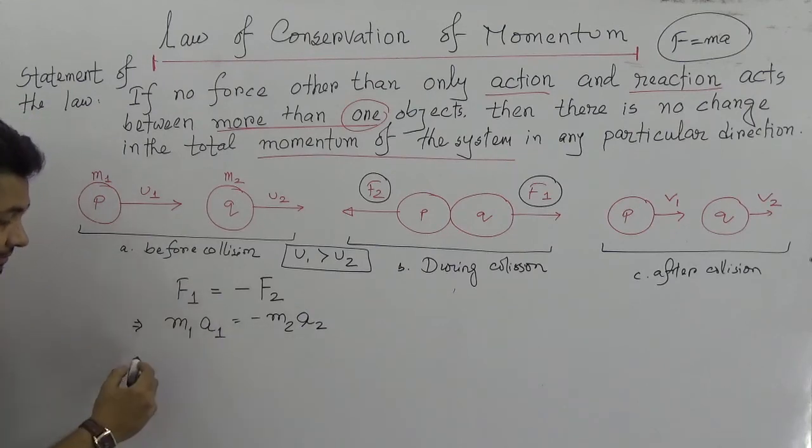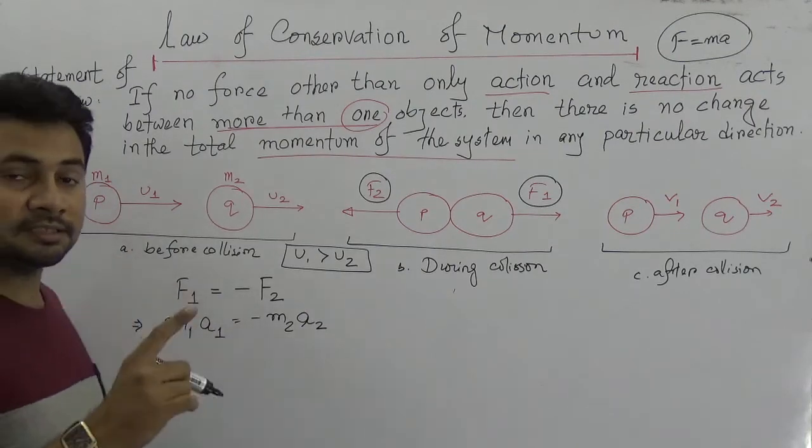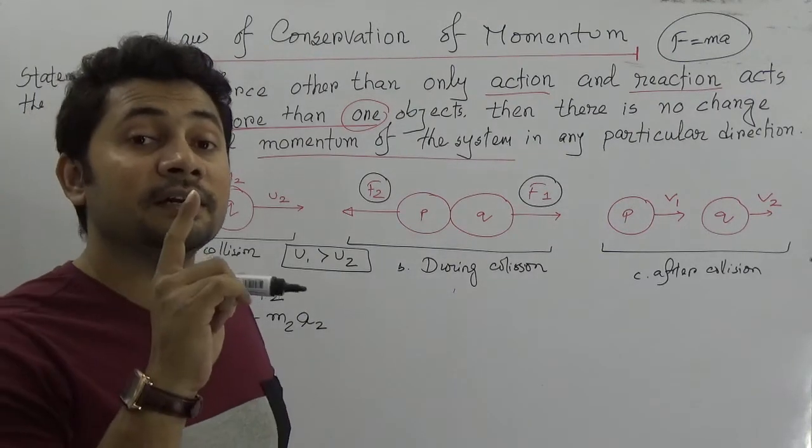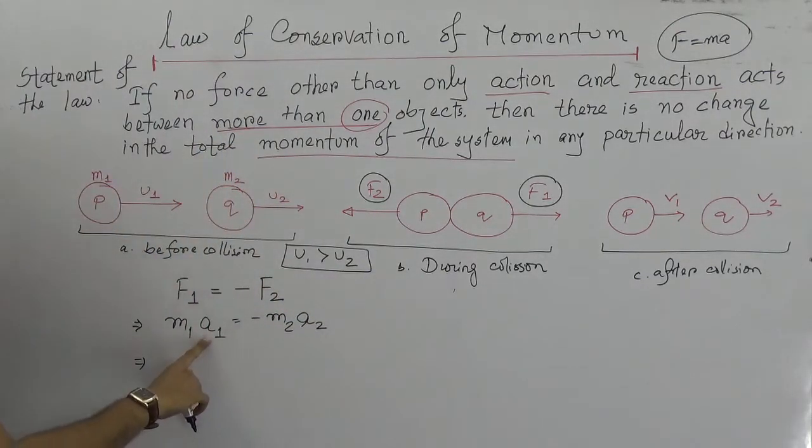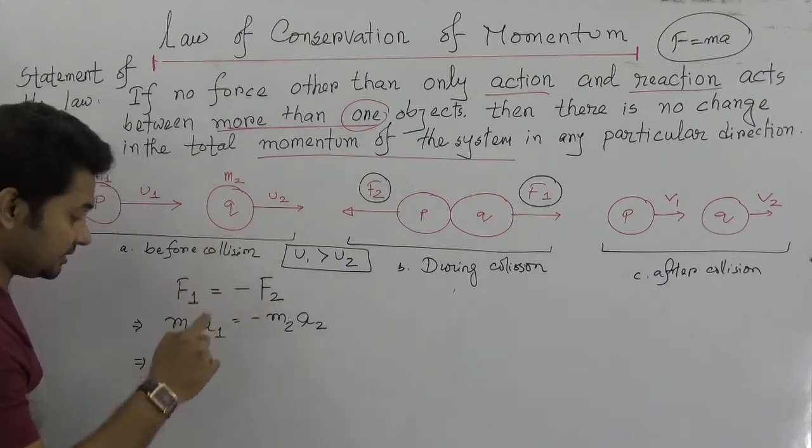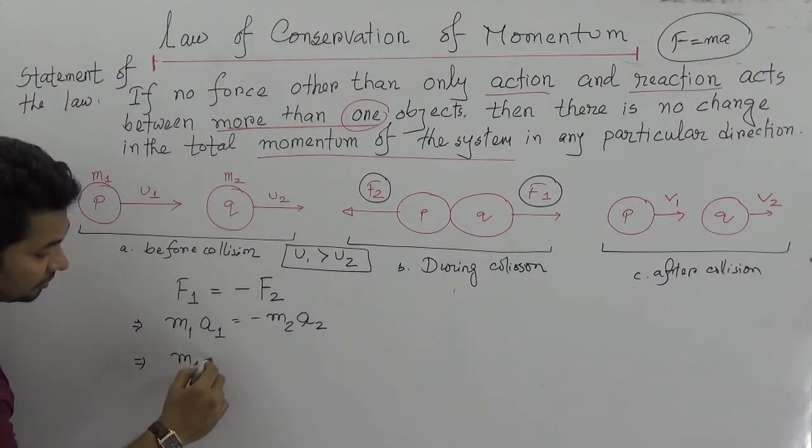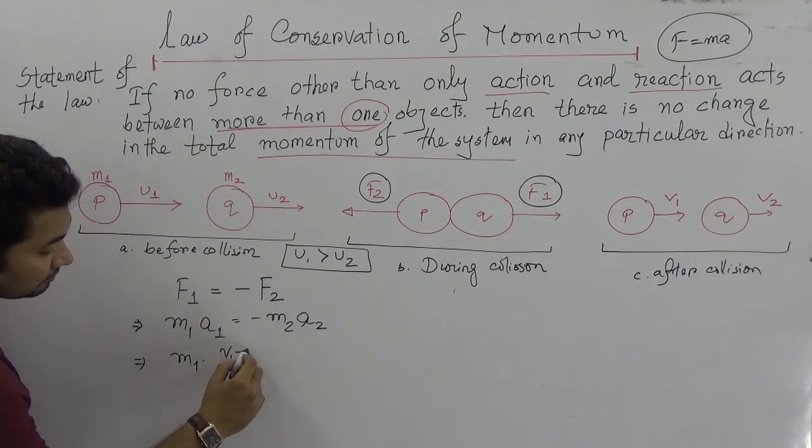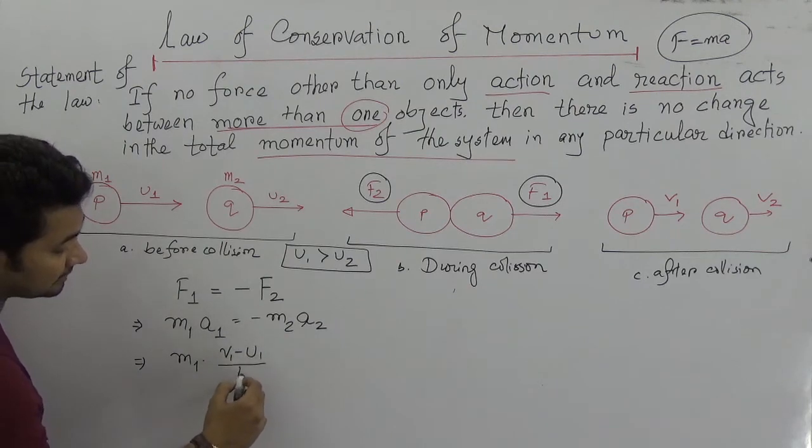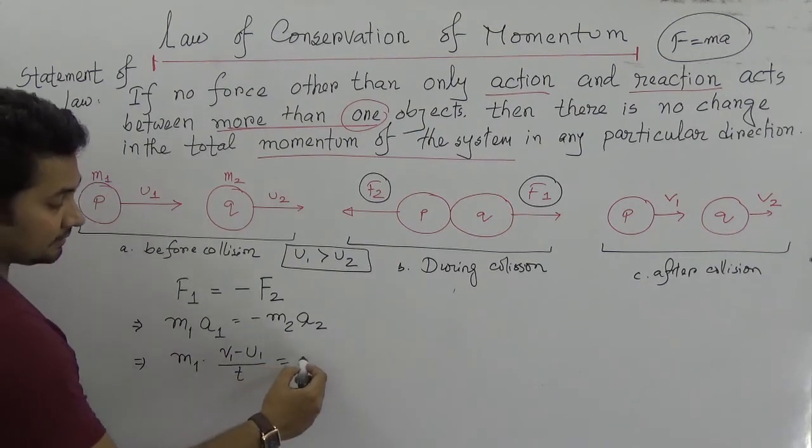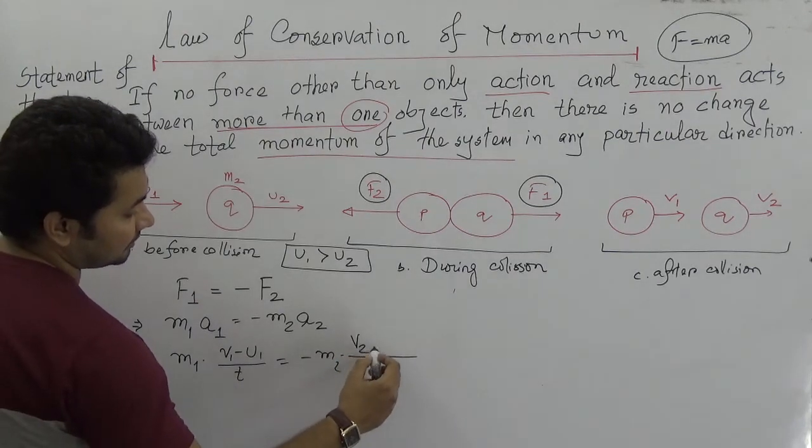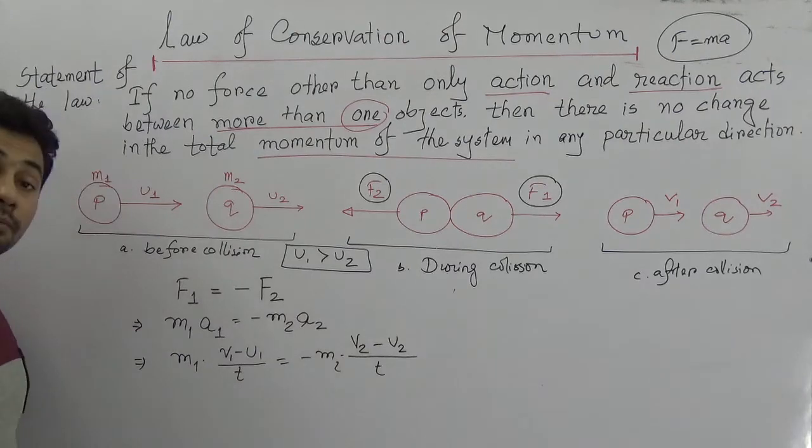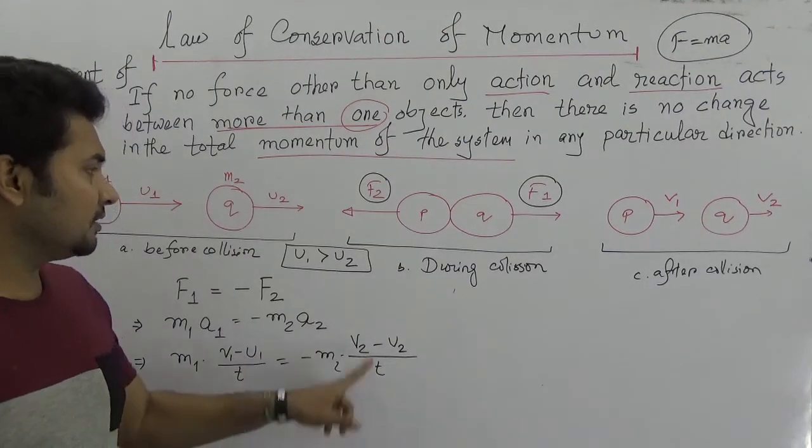So we can write F1 is M1A1. As we know from the second law that F is equal to MA, this is a very well known principle, and then this would be minus M2A2.